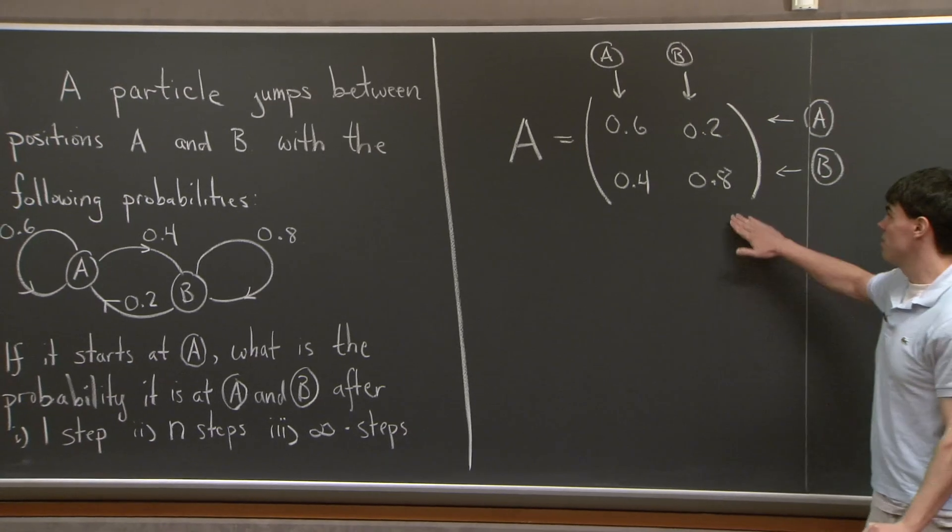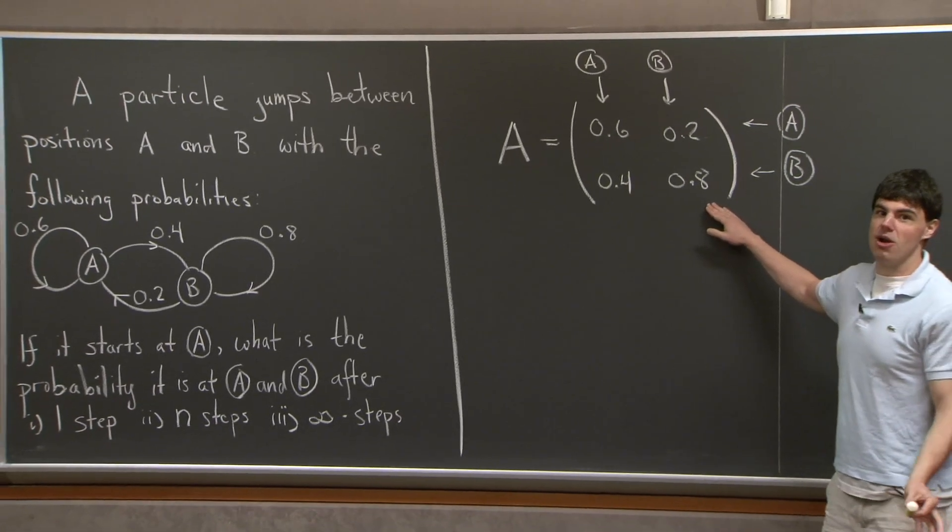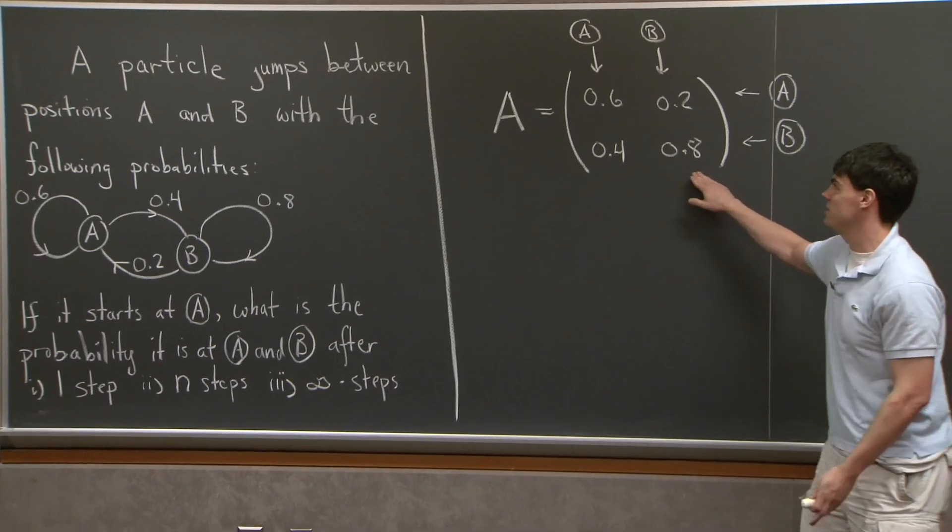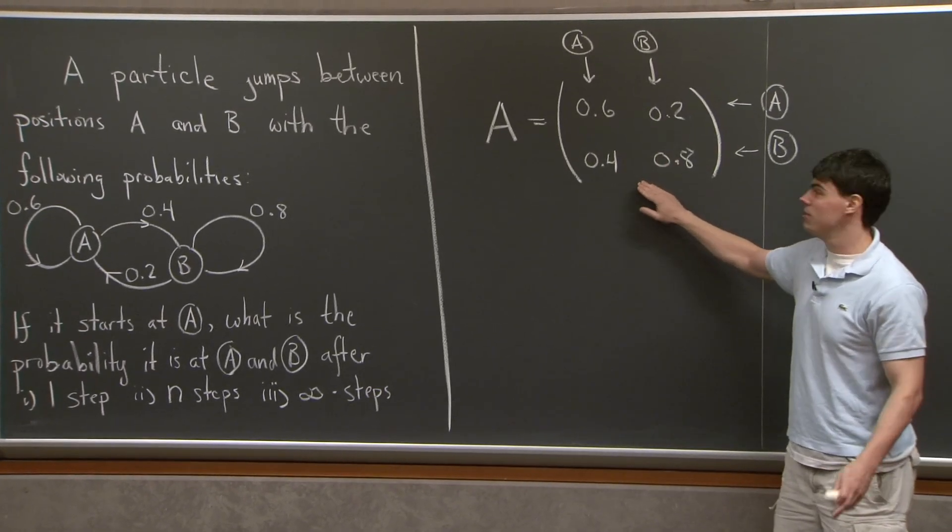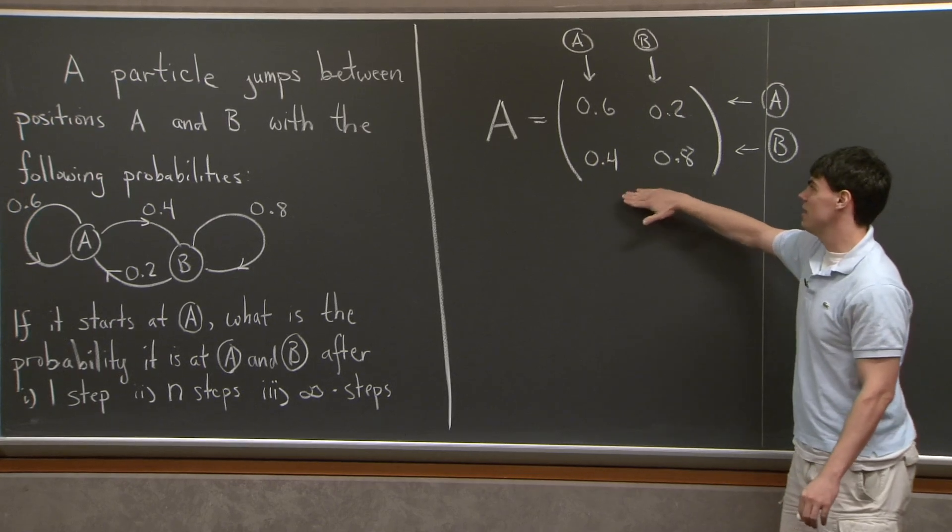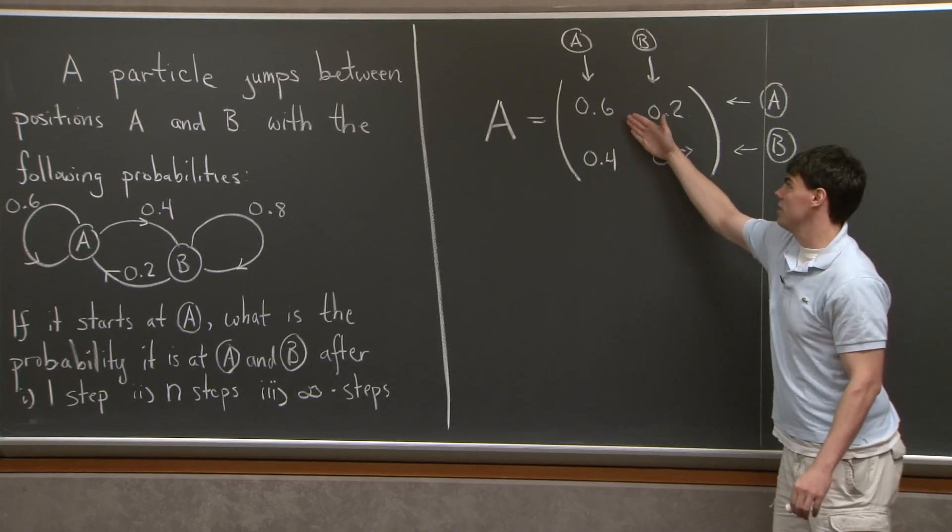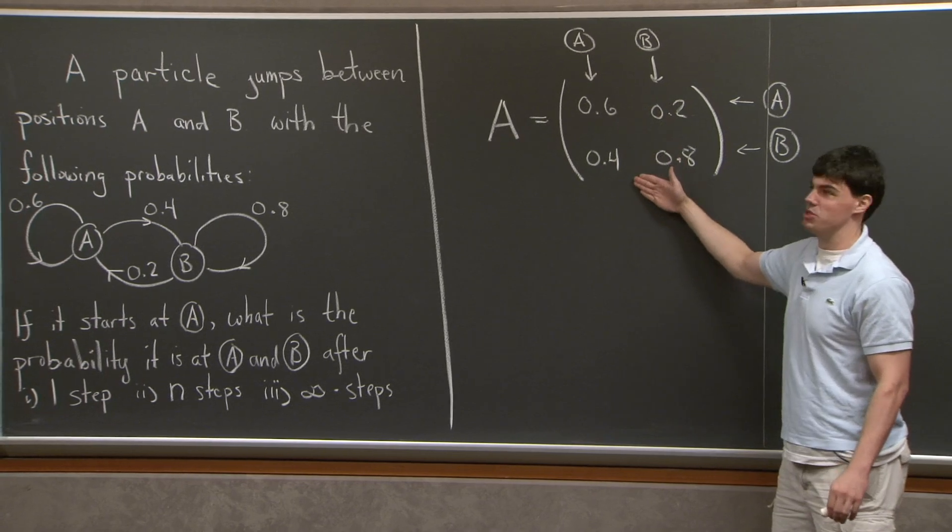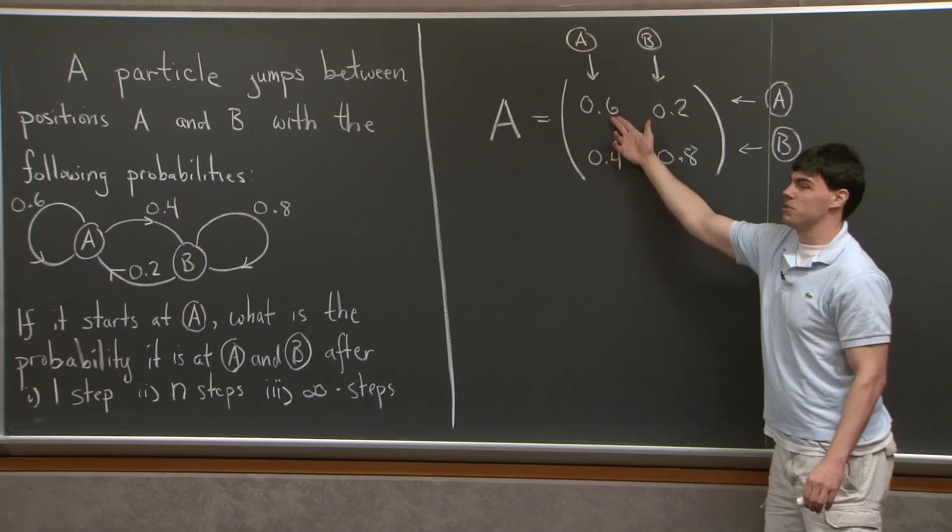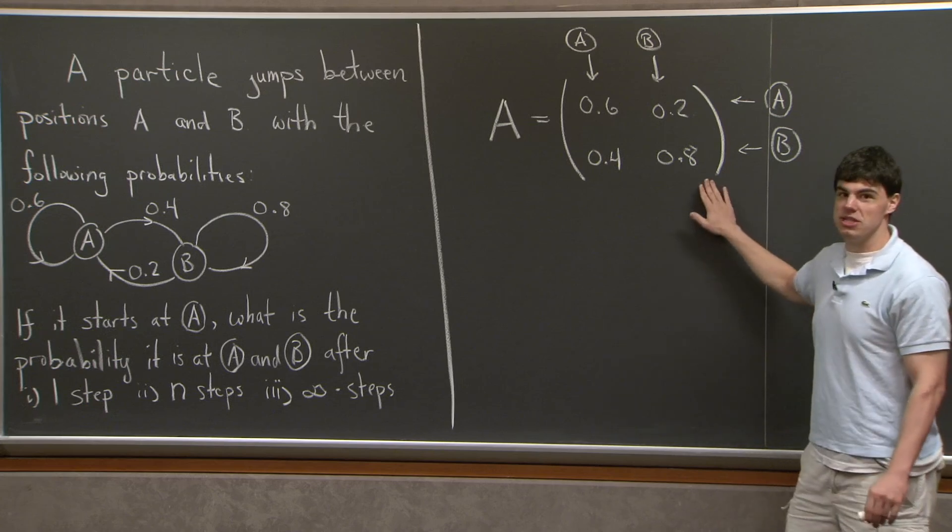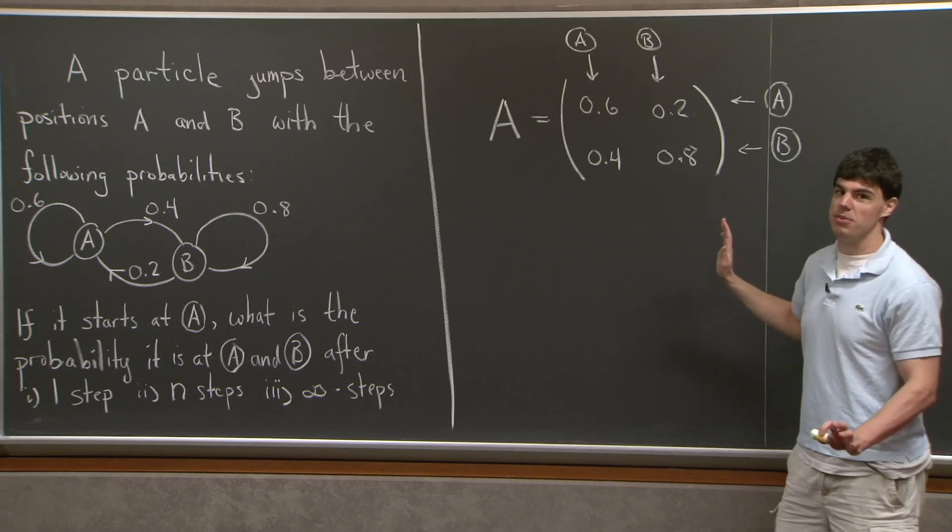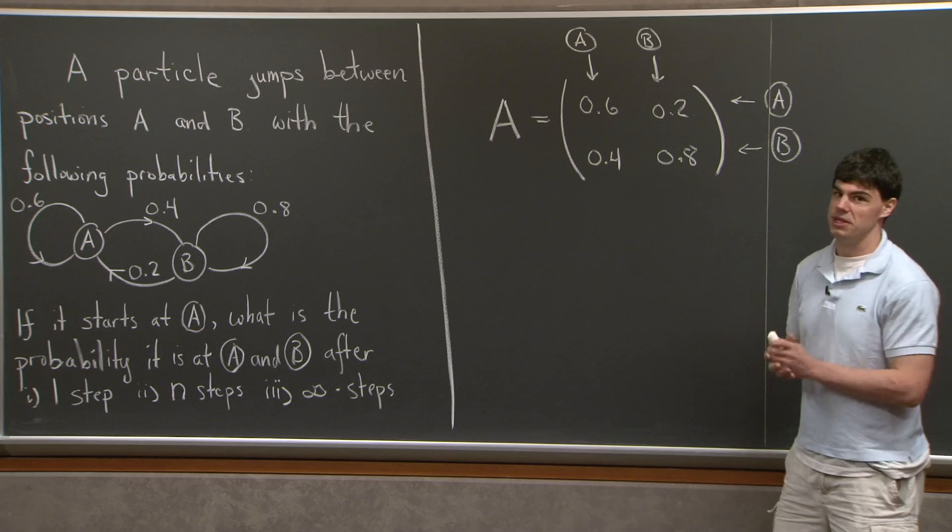OK? So I'll just state briefly, this is what's called a Markov matrix. And it's called Markov because first off, every element is positive or 0. And secondly, the sum of the elements in each column is 1. So if we note 0.4 plus 0.6 is 1, 0.8 plus 0.2 is 1. And these matrices come up all the time when we're talking about probabilities and the evolution of probability distributions.